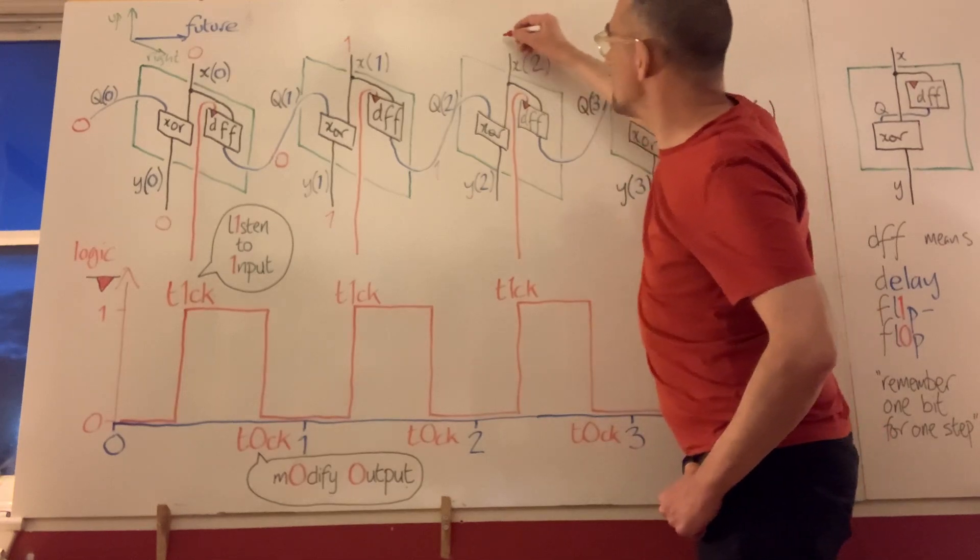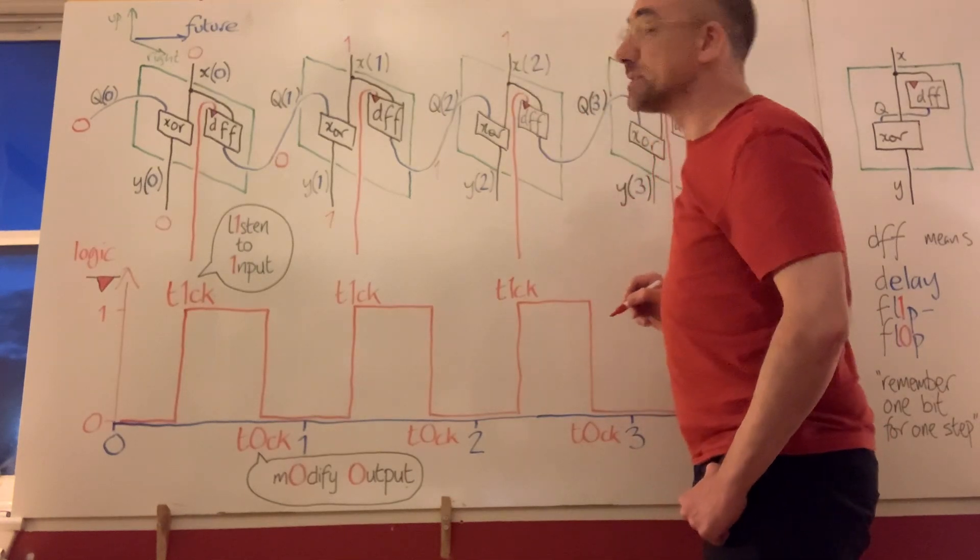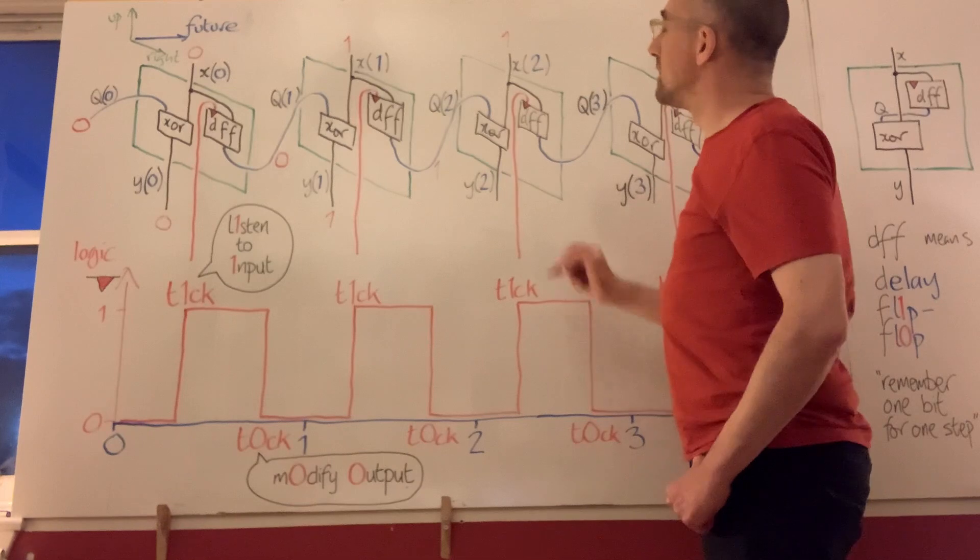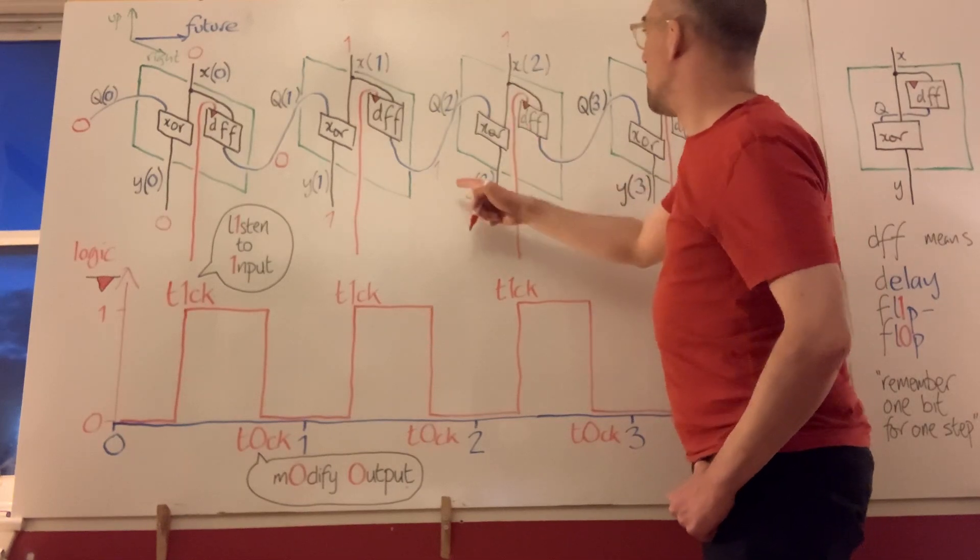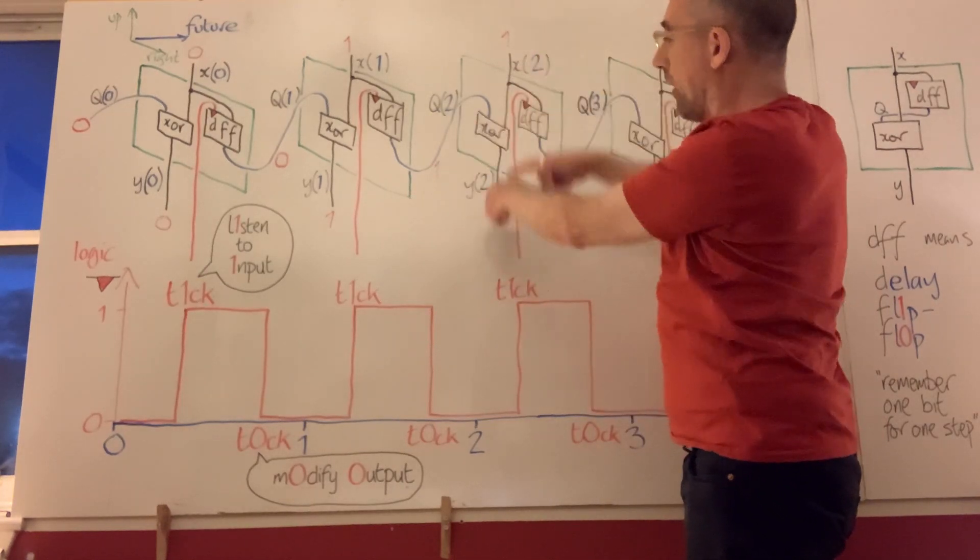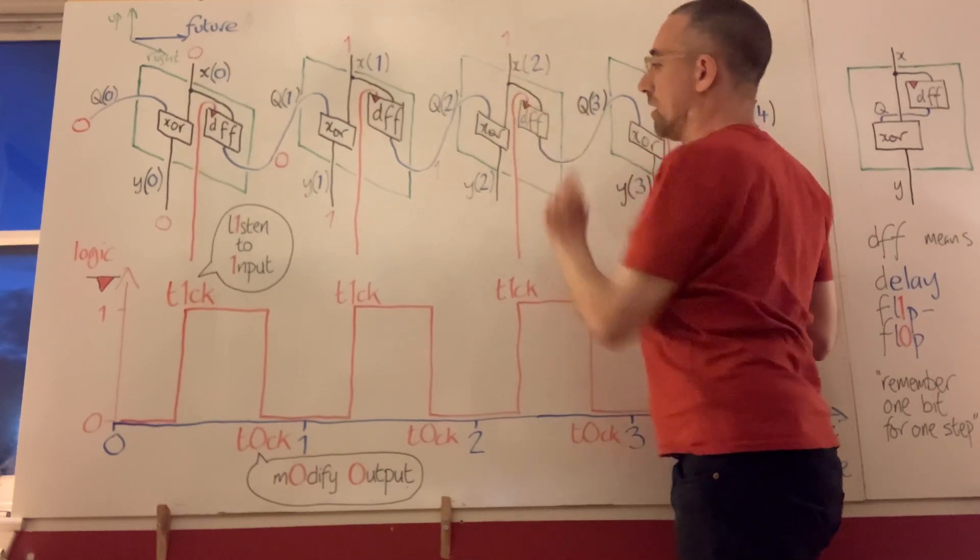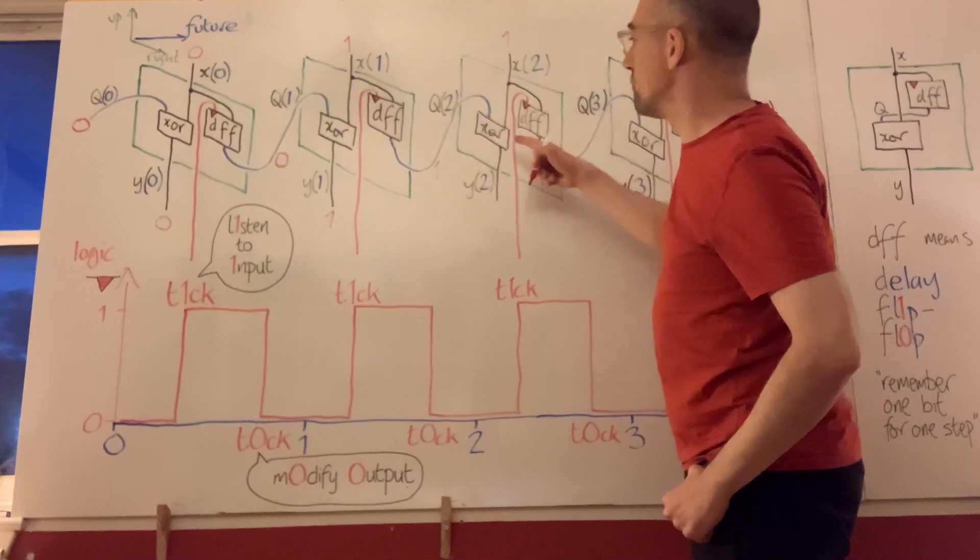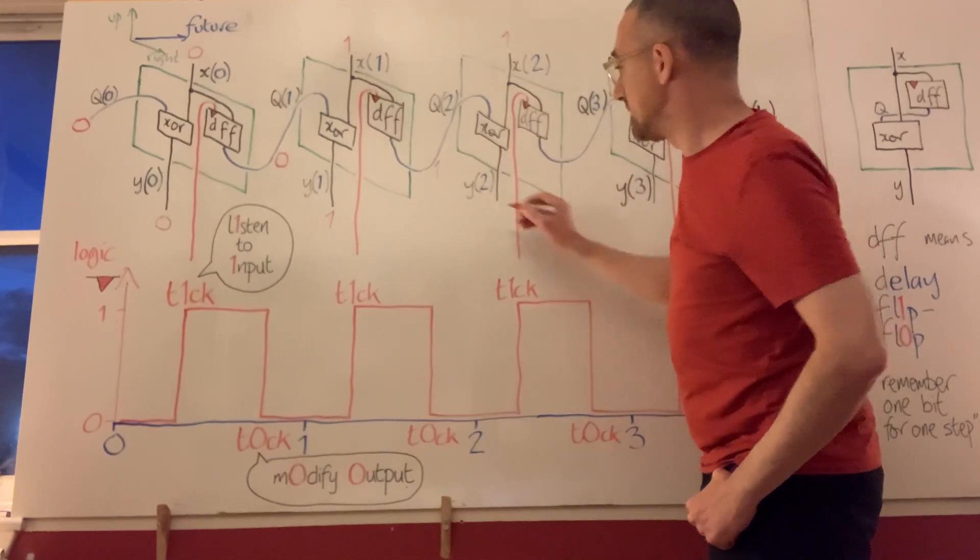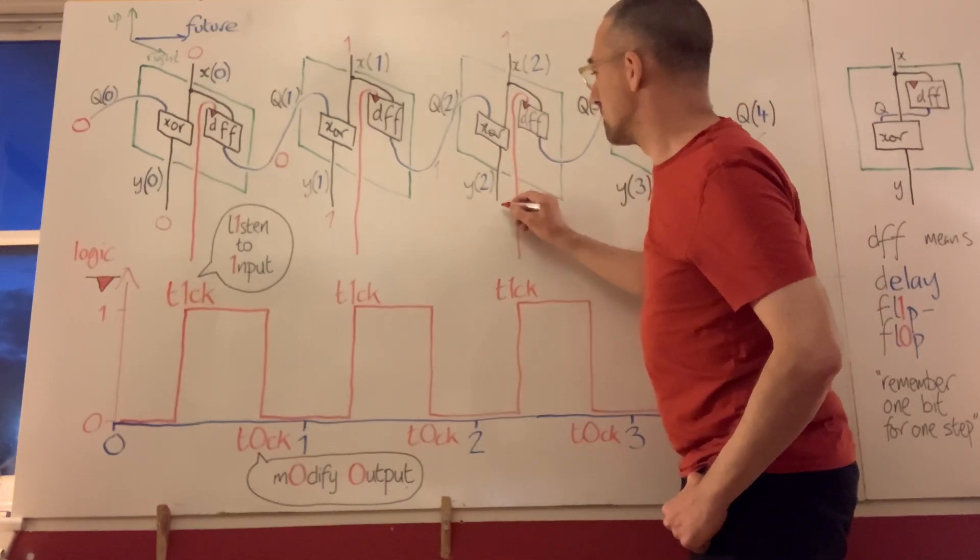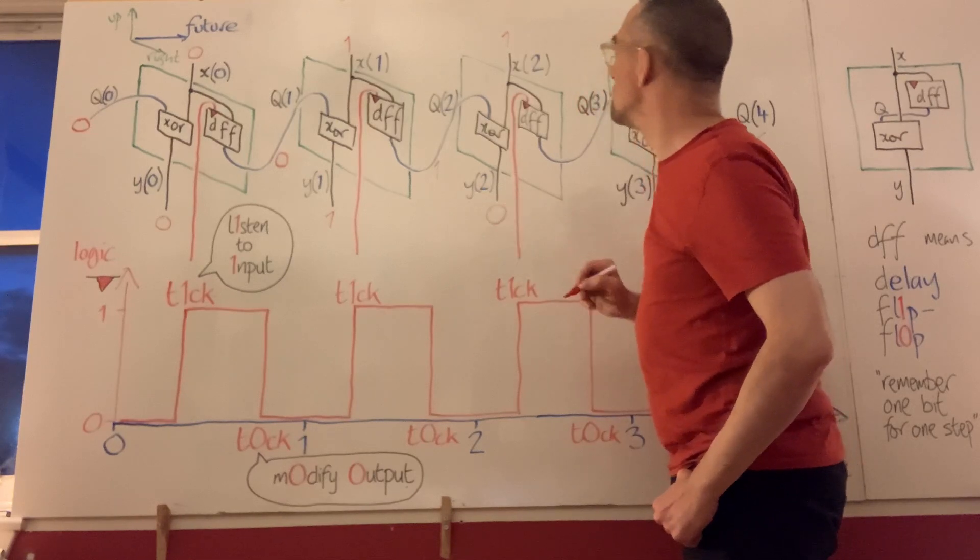And let's suppose we still send in another 1 at time 2. Then when we're computing the output at time 2, we see the 1 coming in from the flip-flop and the 1 coming in from the input. And the ordinary logic of exclusive OR tells us that no, those are not different. So a 0 will come out.